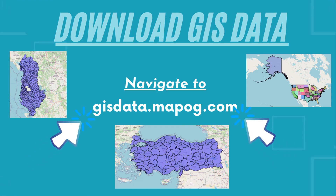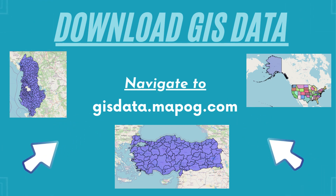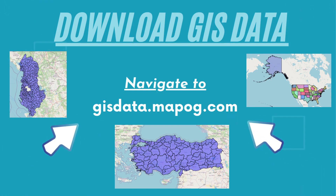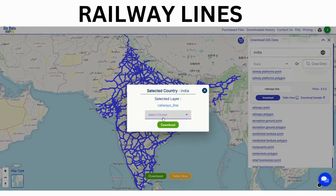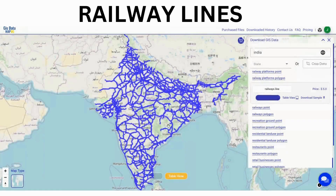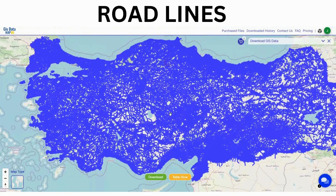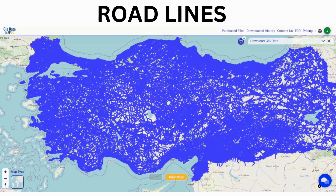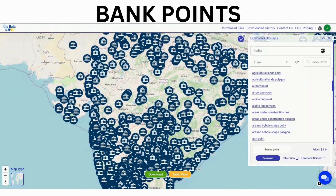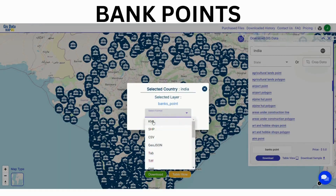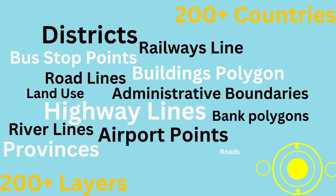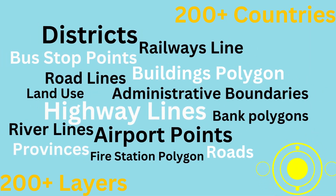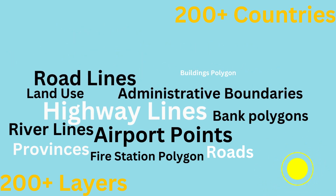Once you have navigated to GISdata.mapoji.com, you have access to download a vast range of data including railway lines, road lines, pin codes, boundary polygons and more — with 200 plus types of data available for 200 plus countries.